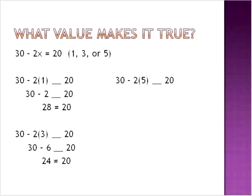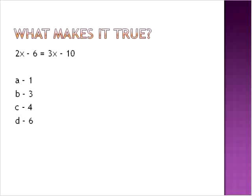30 minus 2 times 5. 2 times 5 is 10. 30 minus 10 is equal to 20. So that is the correct solution right there. So therefore, the value of 5 makes this equation a true statement.